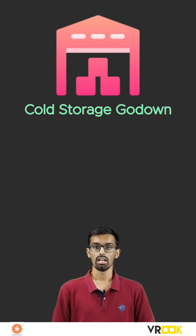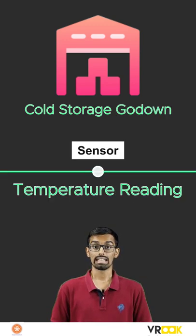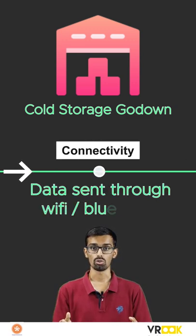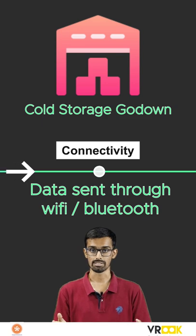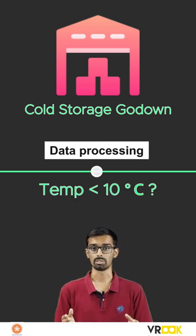Let's say you want to maintain the temperature of a cold storage godown. The temperature sensor is used to take the temperature readings of the godown. Then the temperature data is sent to the cloud through Wi-Fi, Bluetooth, or any other means. On the cloud, a software checks whether the temperature is within the acceptable range.